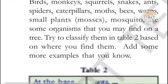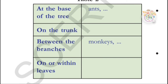Here is how the table looks. At the base of the tree — what organisms can you see there? On the trunk — what creatures or organisms can you see? On the trunk means on the stem. Between the branches — one example is given: monkeys live on the branches of a tree. And on or within leaves — some creatures use the leaves, folding them to make a shelter and living within the leaves.